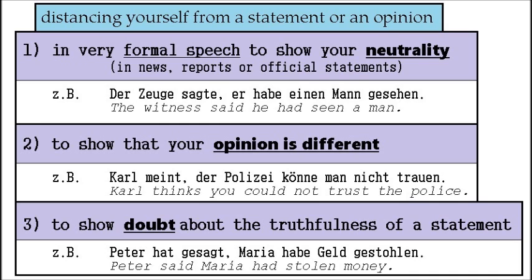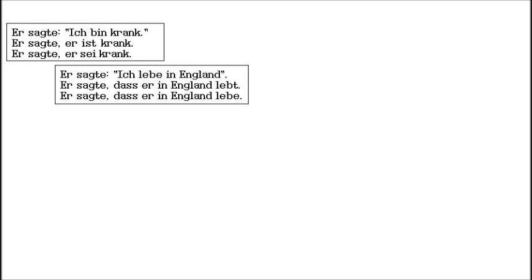Let's look at some more examples. 'Er sagte, ich bin krank' / 'Er sagte, er ist krank' / 'Er sagte, er sei krank.' Using the Konjunktiv expresses that you are not sure if he is actually ill, while using the present tense means that you believe it. Similarly: 'Er sagte, dass er in England lebt' versus 'Er sagte, dass er in England lebe.' The Konjunktiv 1 means you can't confirm whether he actually lives in England; using the present tense means you think the statement can be trusted.